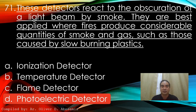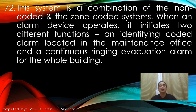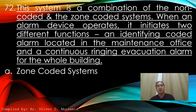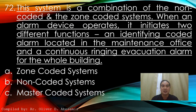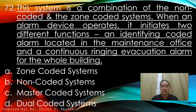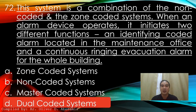This system is a combination of a non-coded and the zone-coded system. When an alarm device operates, it initiates two different functions: an identifying coded alarm located in the maintenance office, and a continuous ringing evacuation alarm for the whole building. A. Zone coded system. B. Non-coded system. C. Master coded system. D. Dual coded system. Answer: D. Dual coded system.